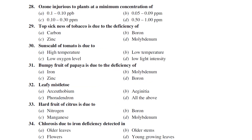Ozone is injurious to plants at a concentration range of 0.10 to 0.30 ppm. This is the minimum concentration at which ozone can cause disease in plants.